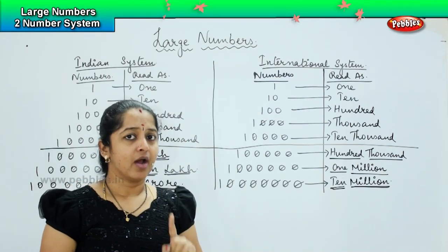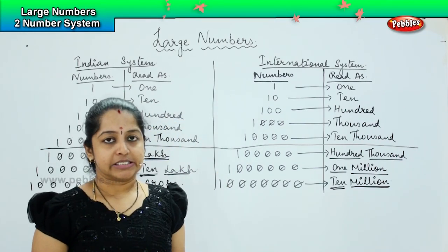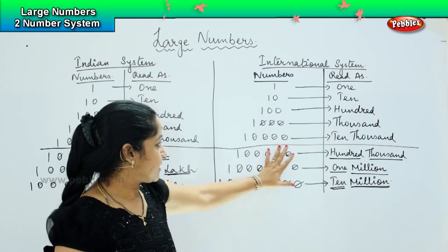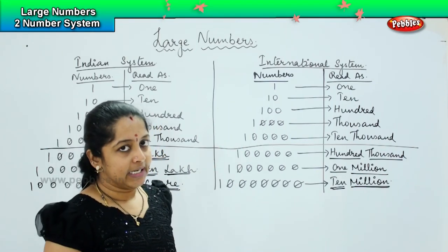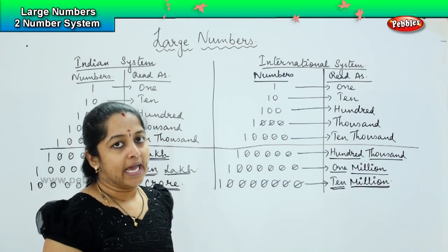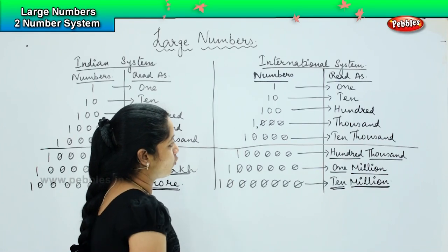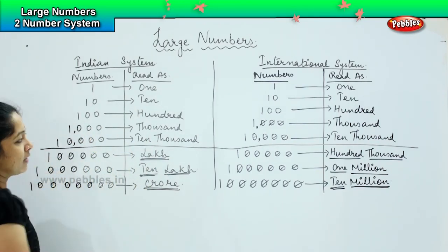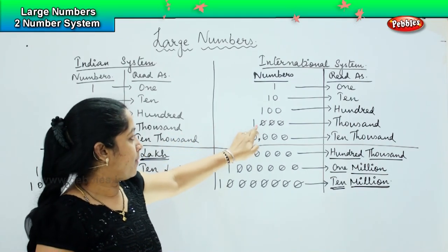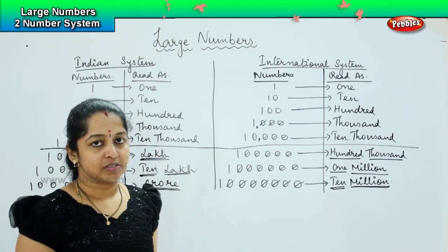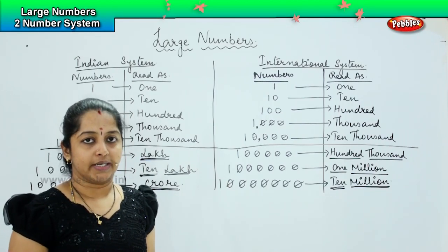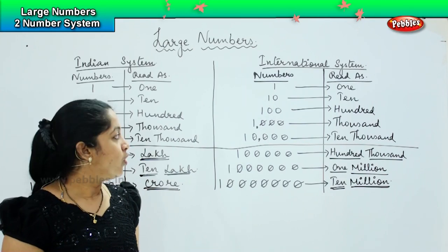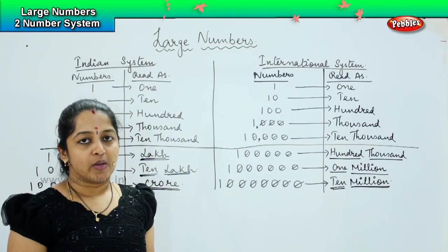There is one more difference between the Indian system and the international system — the use of commas. Why do we put commas? Because when a large number is written without commas, it is very clumsy and you literally have to count how many zeros there are. But if I separate it with a comma, it makes the number much easier to understand. For example, one comma followed by three zeros is thousand; ten comma three zeros is ten thousand. Putting a comma saves time, helps identify the number more quickly, and avoids mistakes in reading number values.